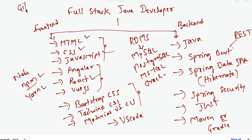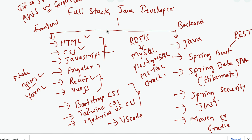A full stack Java developer should also know about Git or SVN, which are version control system tools used to manage source code. It is also good to know about deploying the full stack application to a cloud platform, such as AWS, Google Cloud, Azure, or Oracle Cloud.